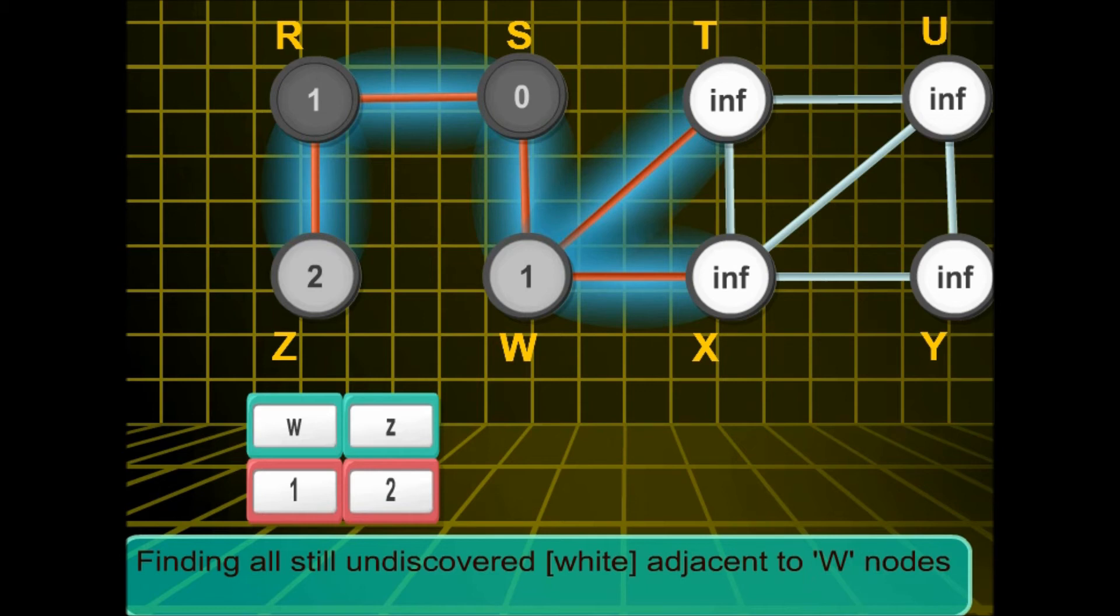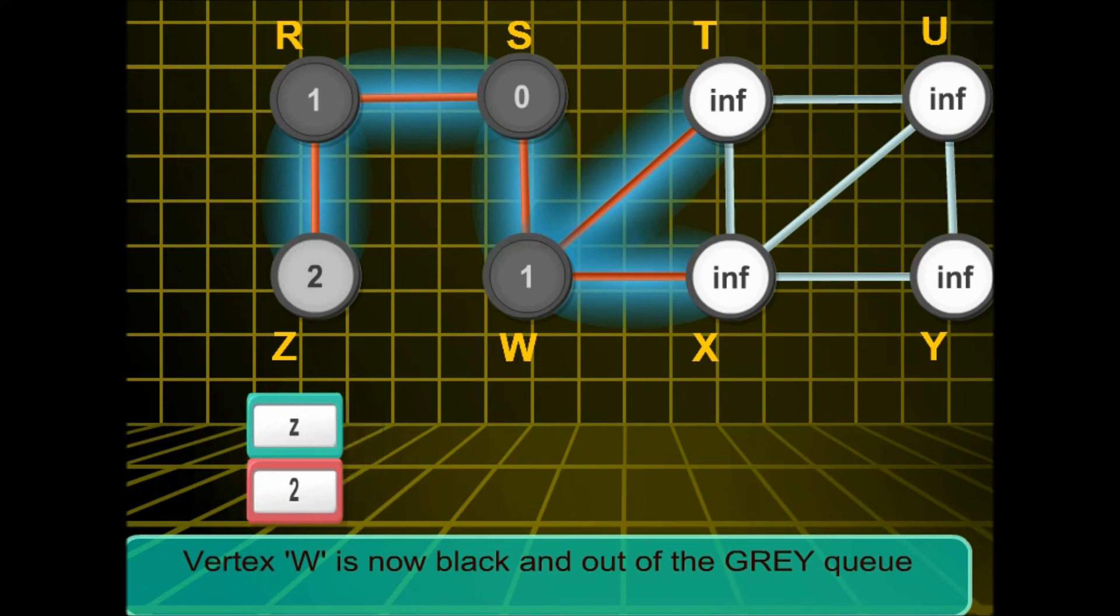Next, w will be dequeued and we'll be looking for its neighbours. W goes out, and now we'll be enqueuing t and x.